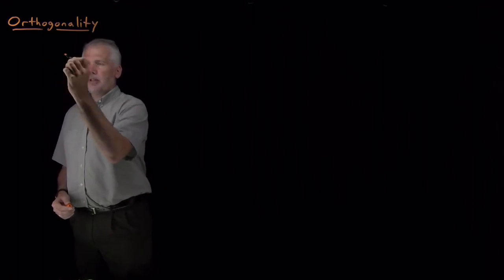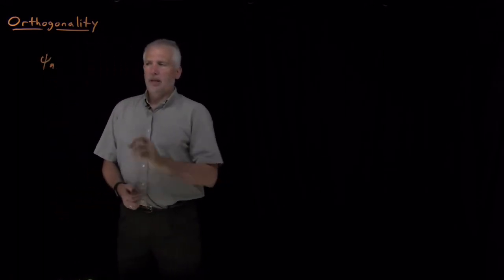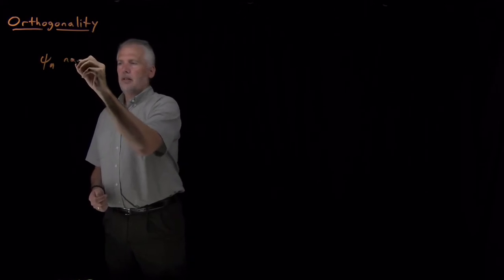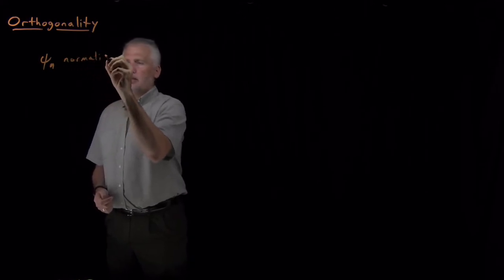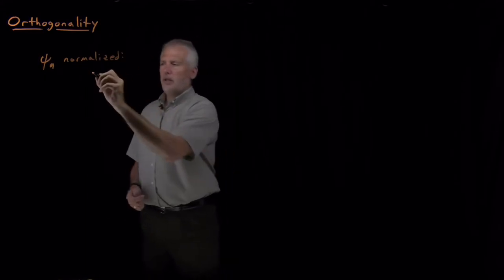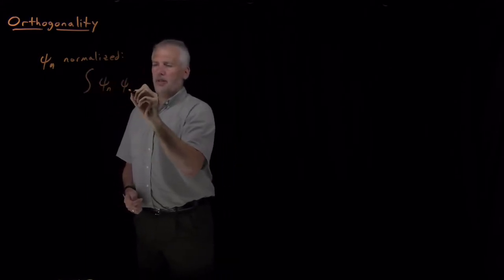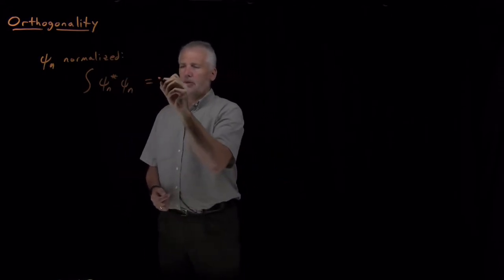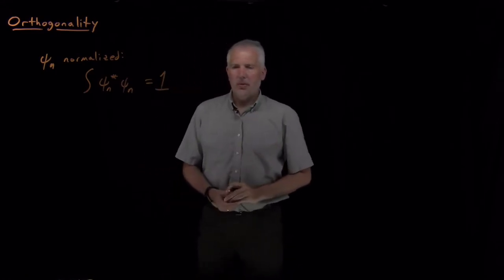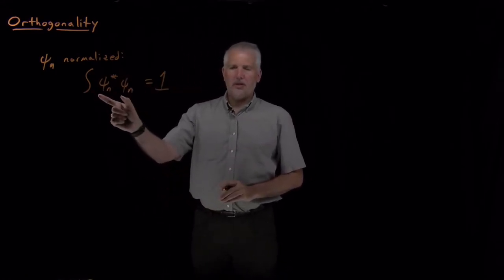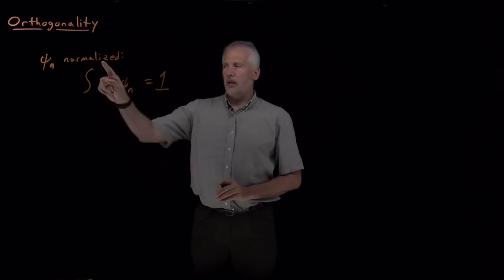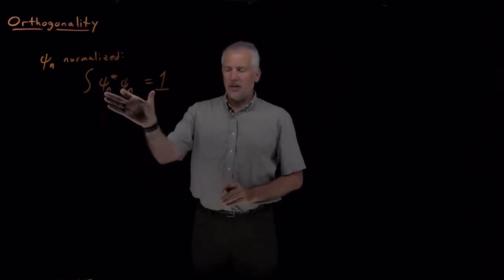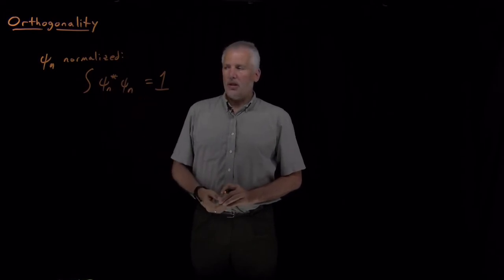So now we understand what it means when we say a wave function is normalized. A wave function psi sub n is normalized when the integral — if I integrate that wave function times itself, taking the complex conjugate of one of them if needed — that integral comes out to be exactly 1. This is because that product is the probability of finding the wave function at a particular place, and the probability of finding it anywhere has to be 100%. So a normalized wave function is one where this integral is equal to 1.